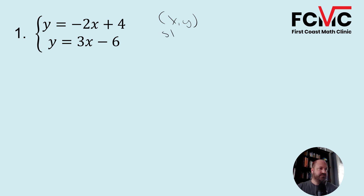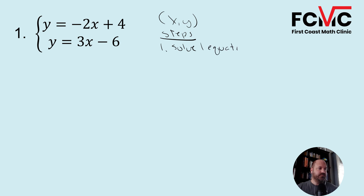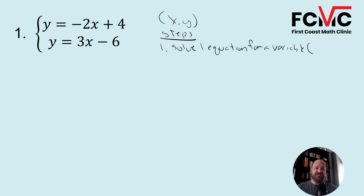I'm going to write the steps to solve over here using the substitution method. So our first step: we want to solve one equation for a variable. The easiest way to identify what variable we want to solve for — we could technically solve for any variable, but we want to make our math as easy as possible. So we want our variable to have a positive coefficient of 1.